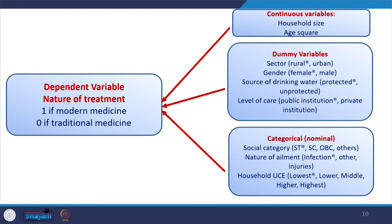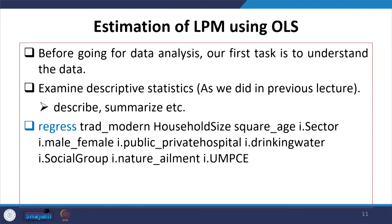Here are the dependent and independent variables. The dependent variable is defined as 1 for modern medicine and 0 for traditional medicine. The independent variables include some continuous variables, some dummy variables, and some categorical variables, as discussed in our previous regression lecture.